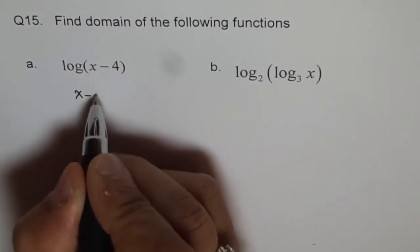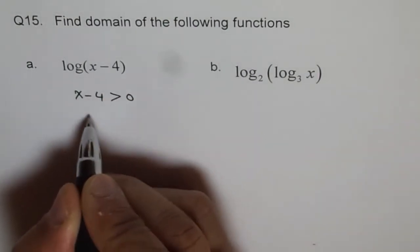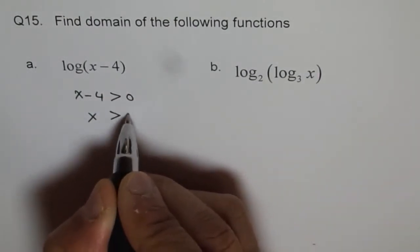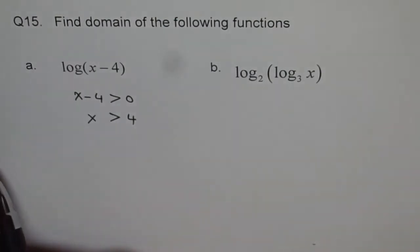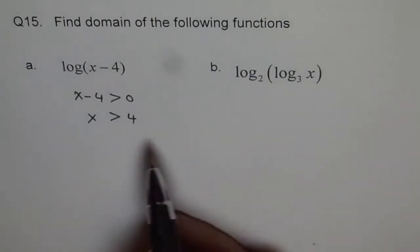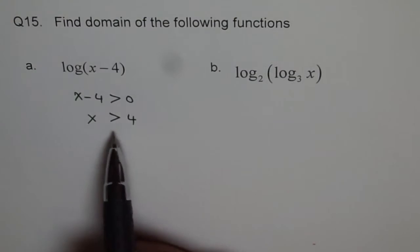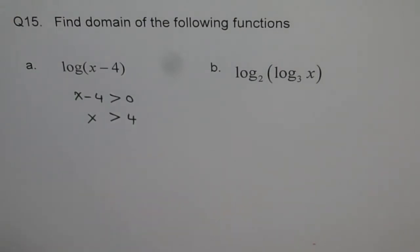So here we can do x minus 4 should be greater than 0, that means x should be greater than 4. It has a vertical asymptote at 4 and it's like this on the right side of the vertical asymptote. So that is the domain.